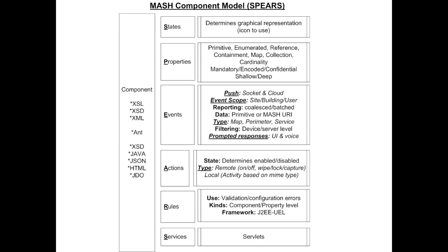Prompted responses are for events which require a yes/no response. An example: on a hot summer night, you're going to bed and you arm your home. Since your master bedroom window is open, an event is sent back to your mobile device stating: 'Cannot arm perimeter — the following doors or windows are open: master bedroom window.' The logical next question is, would you like to bypass and arm anyway? This simple question can be presented to the user via voice or the UI dialog.